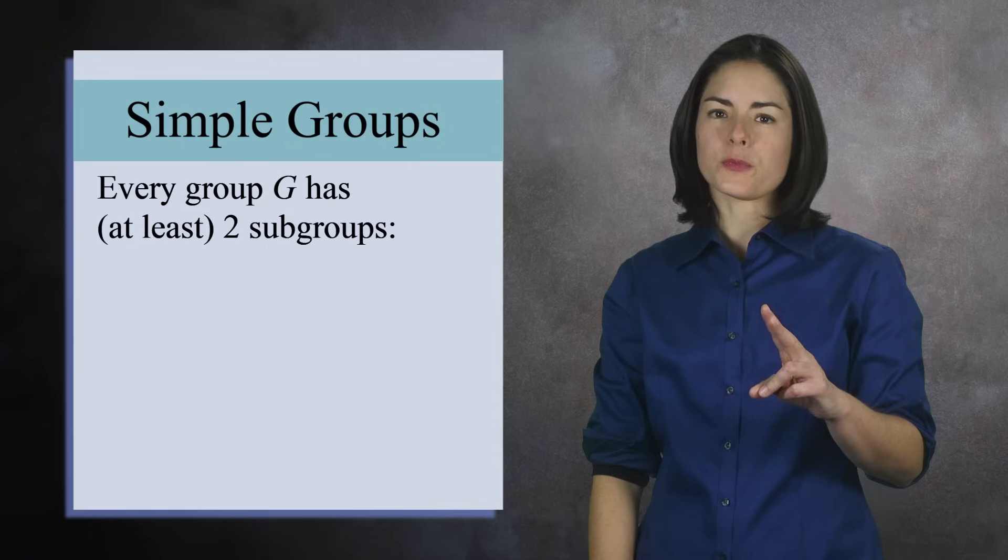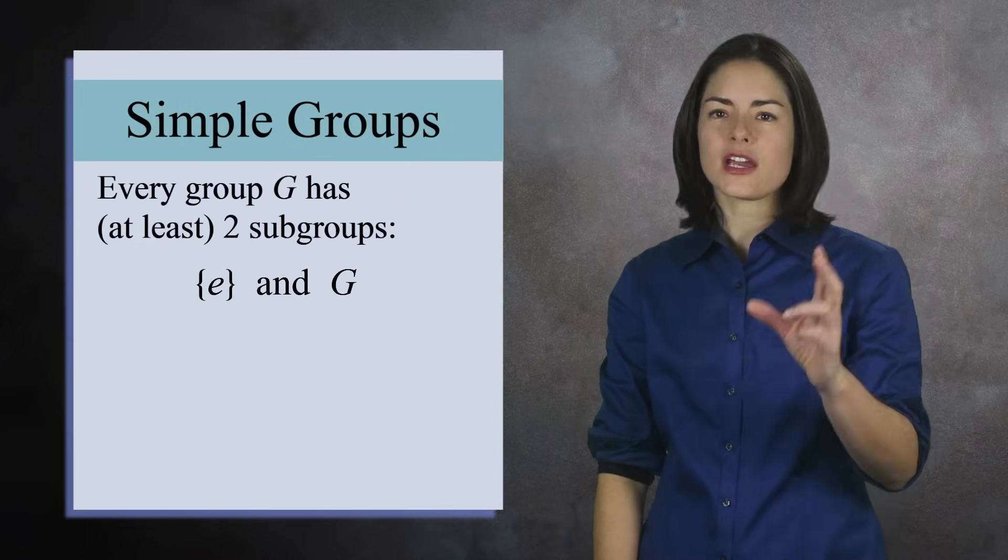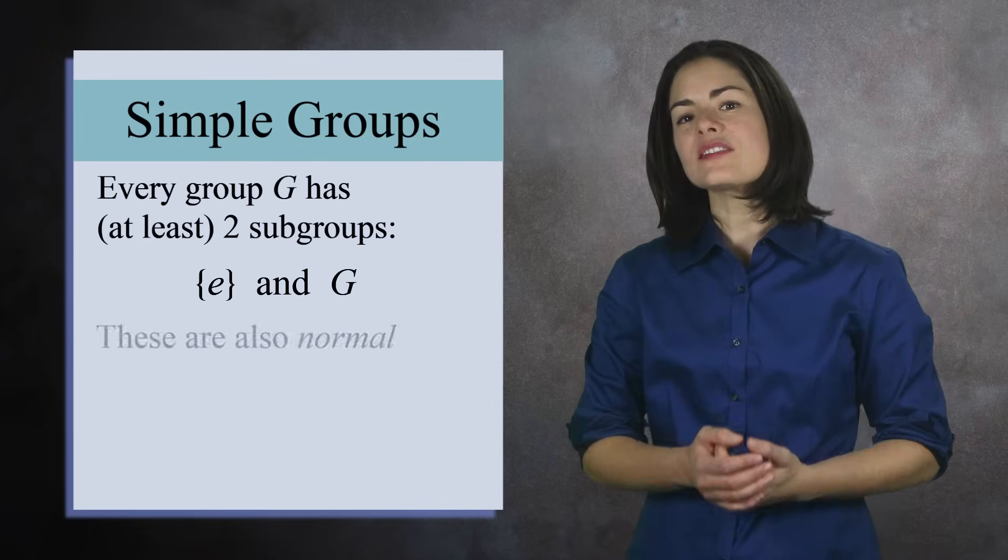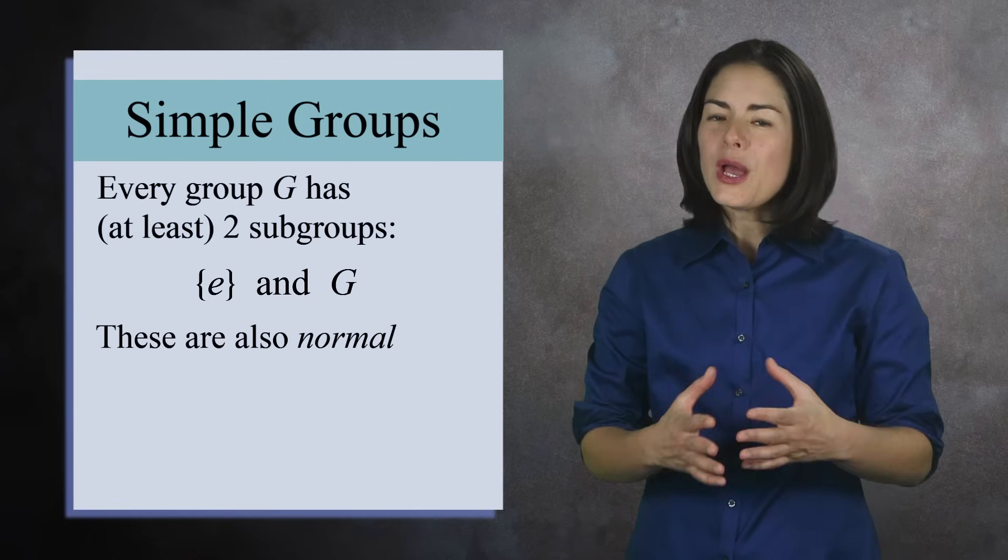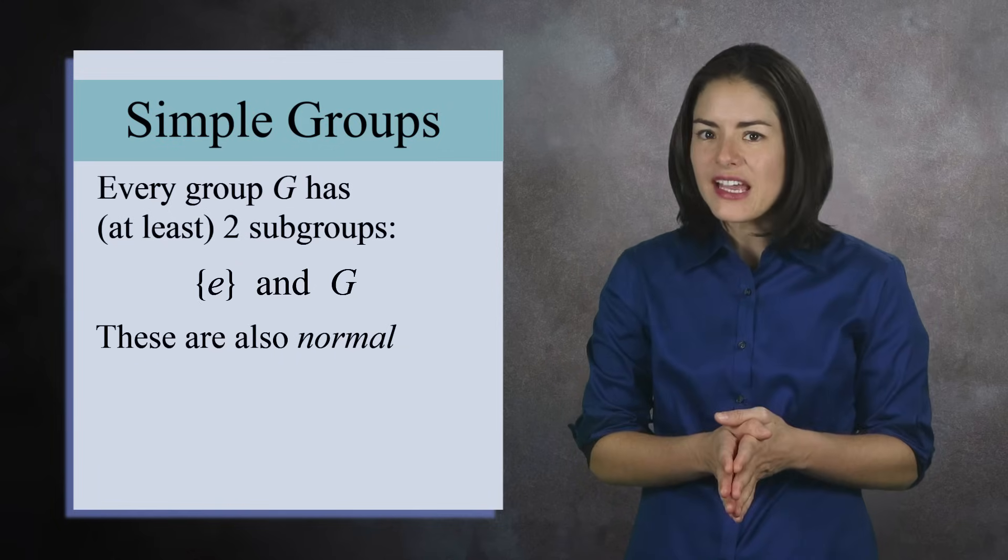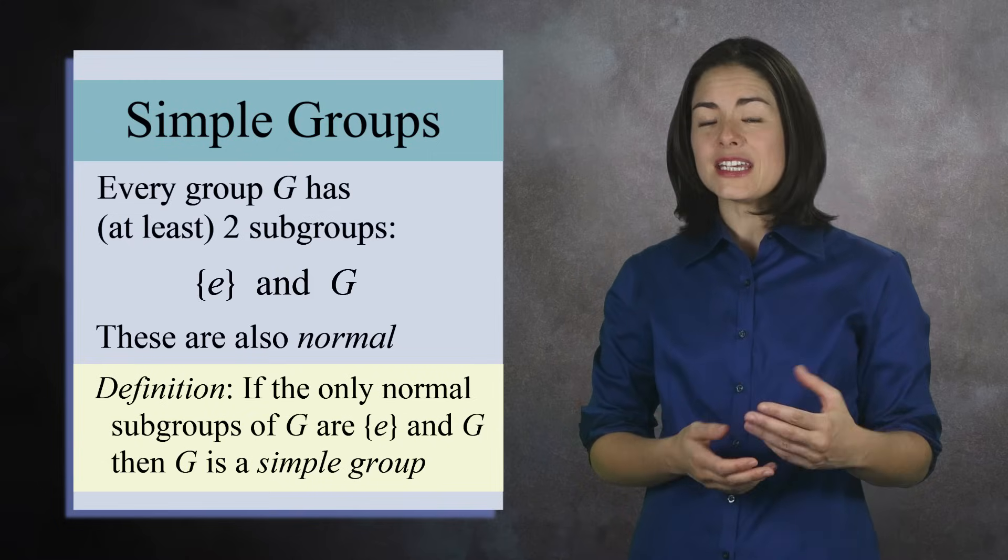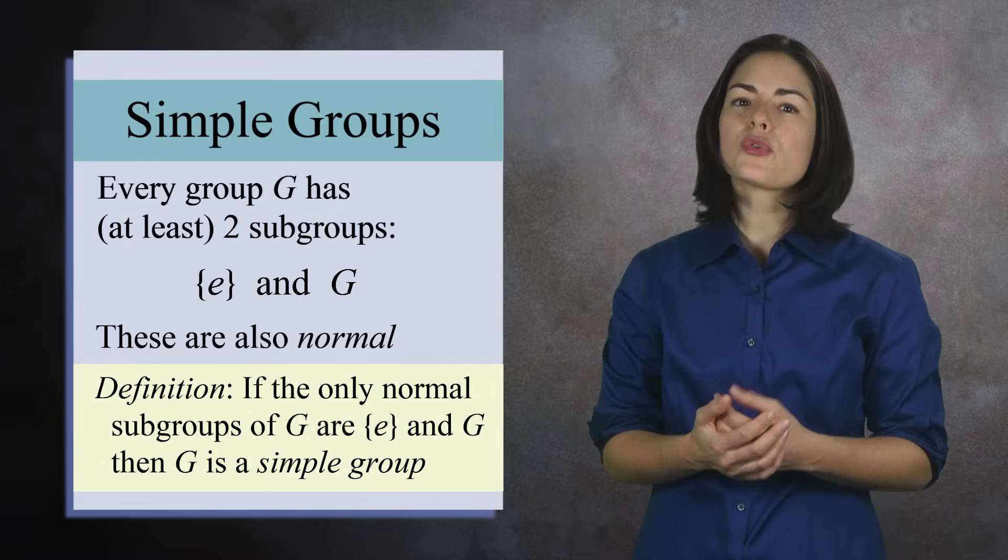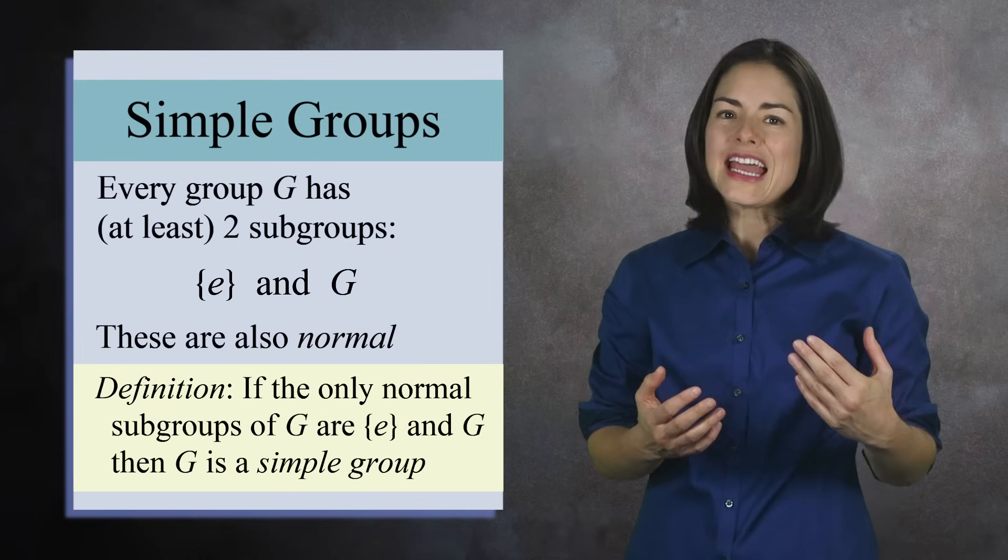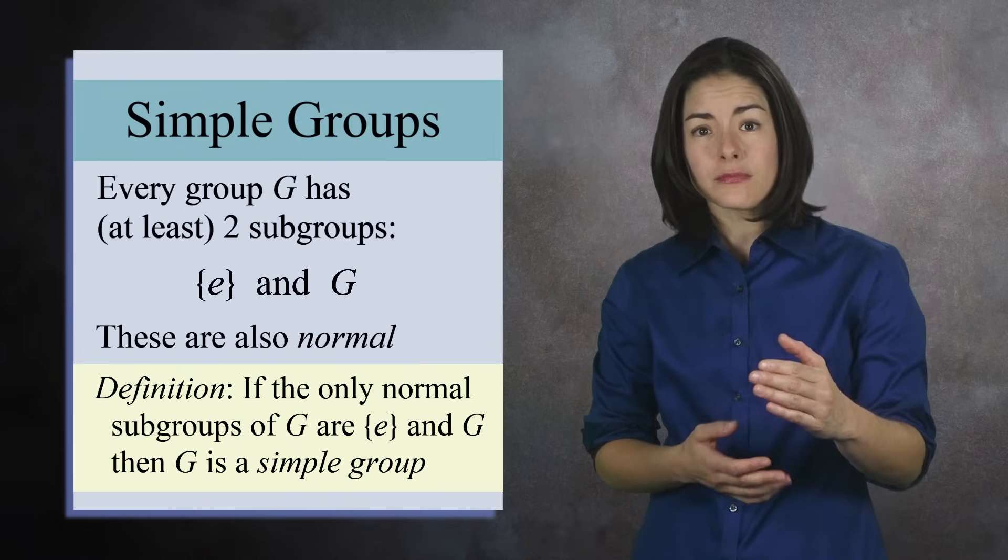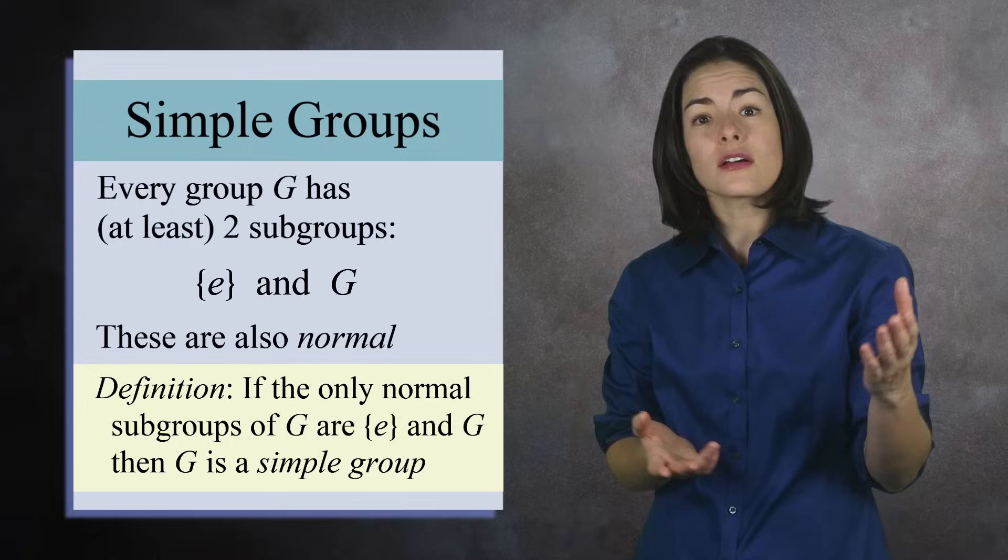Every group G has two subgroups, the identity element and the entire group G. It turns out these are technically normal subgroups, but they aren't very interesting. If a group has no other normal subgroups than these two, then we call G a simple group. A simple group does not have any factor groups, and they are the building blocks of other groups, much like prime numbers are the building blocks of the integers.